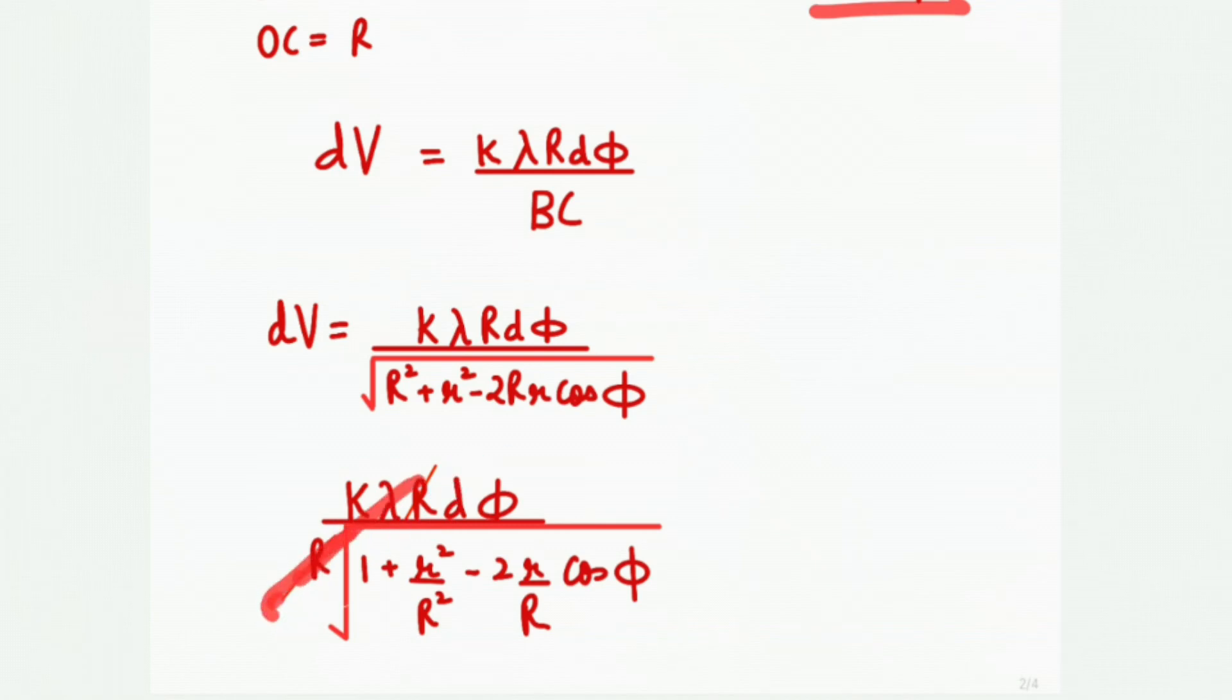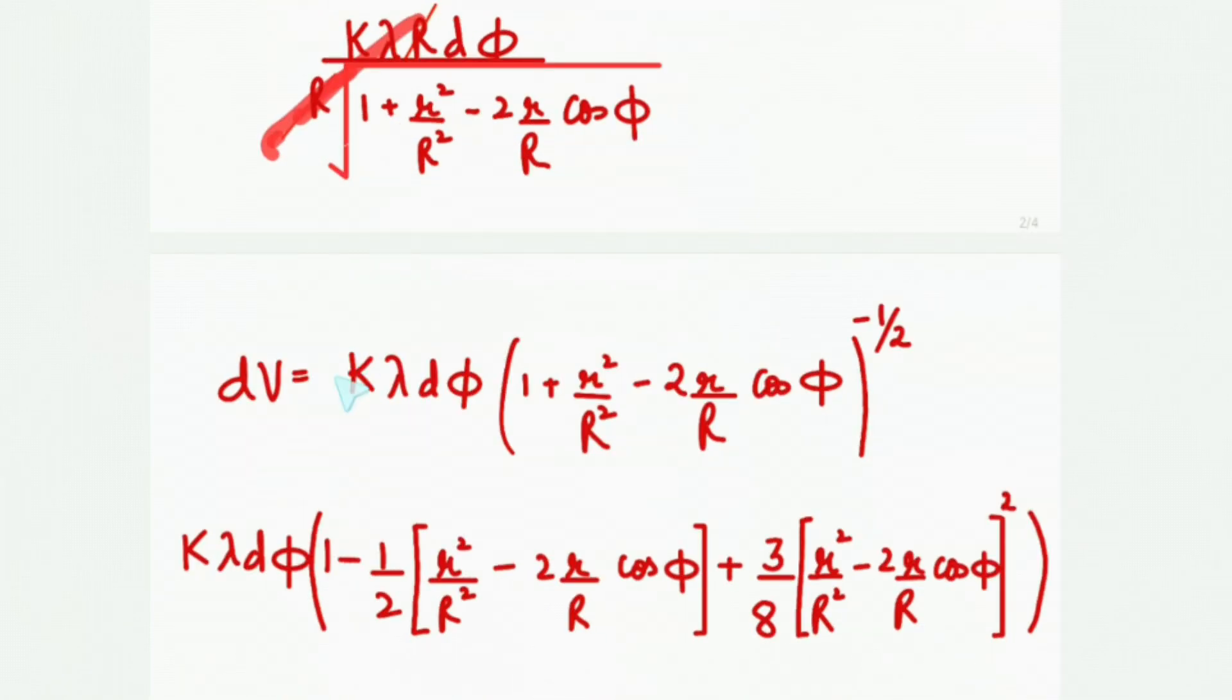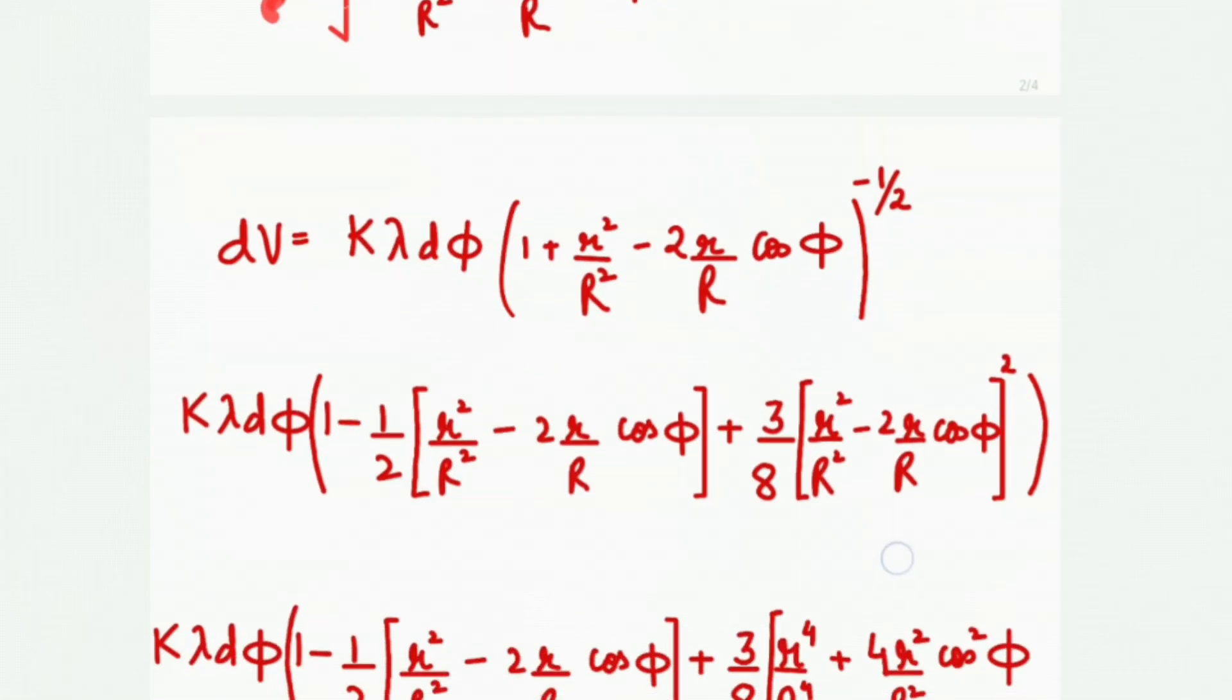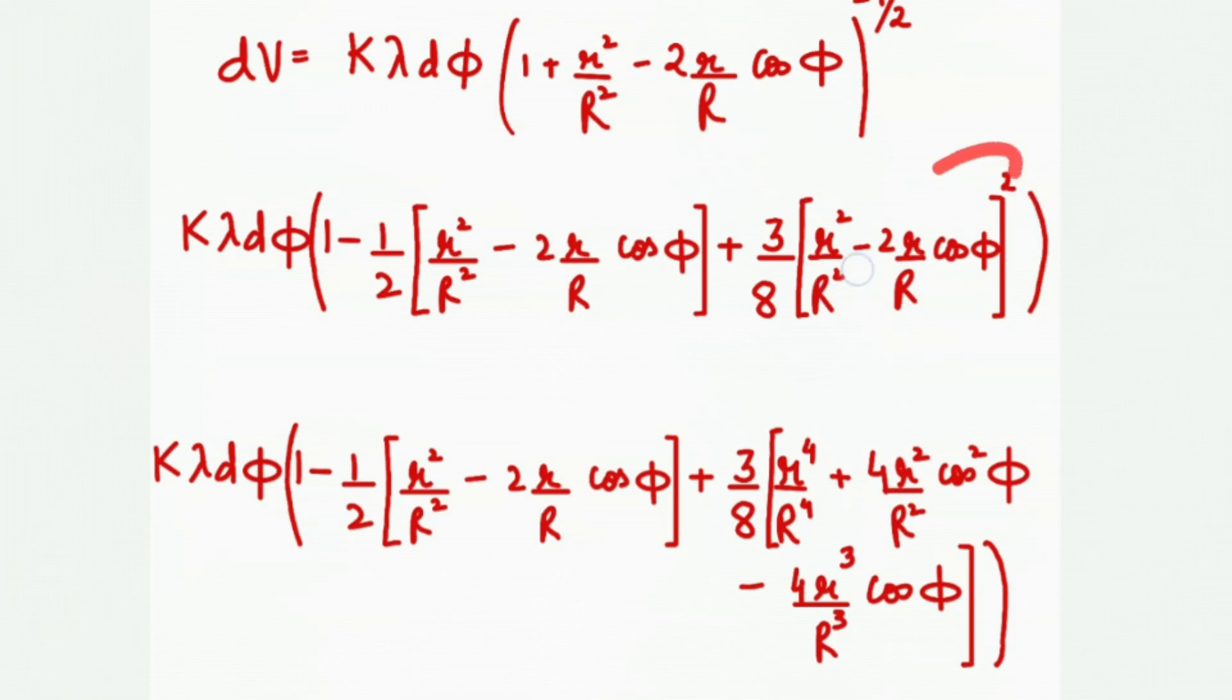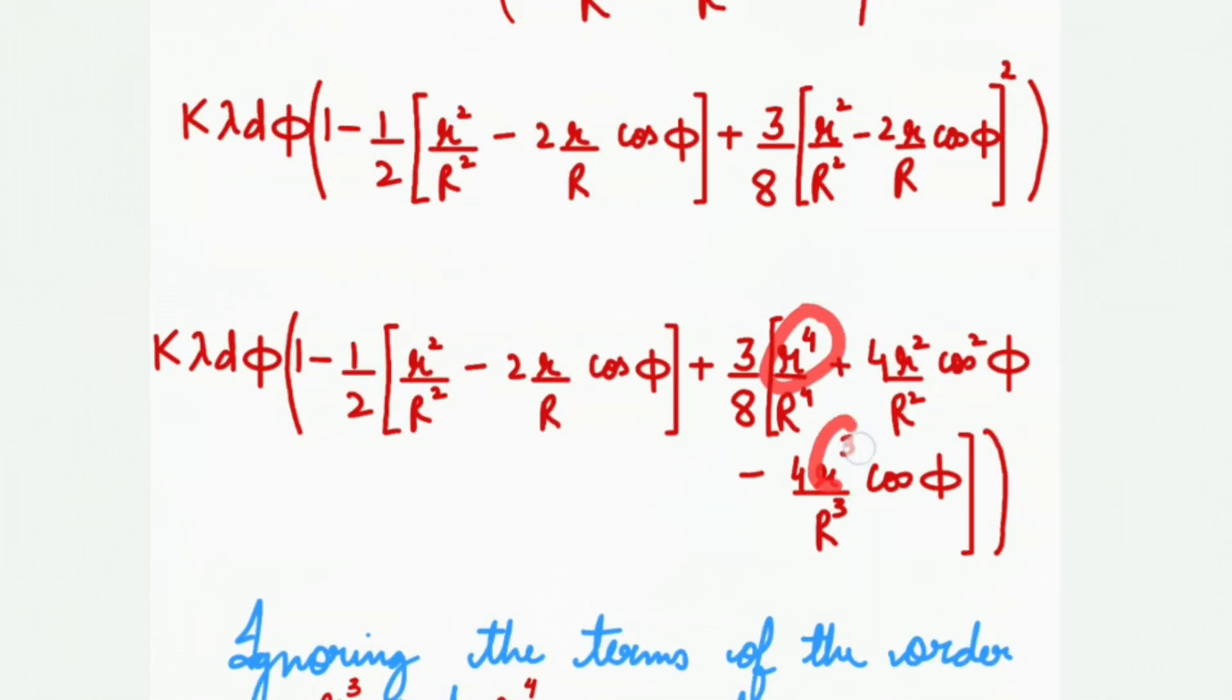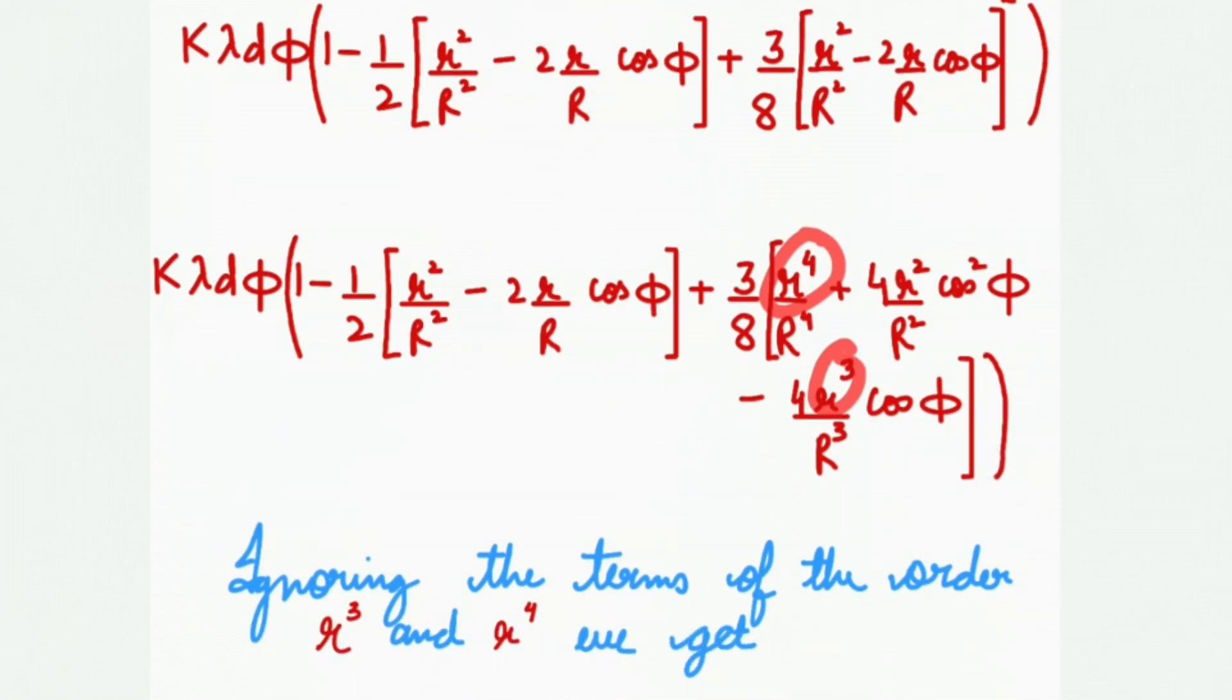Now we'll use binomial expansion and expand this expression. When you expand this whole square term, we get terms with r to the fourth and r to the sixth, and we neglect these terms. So we'll get this dV.